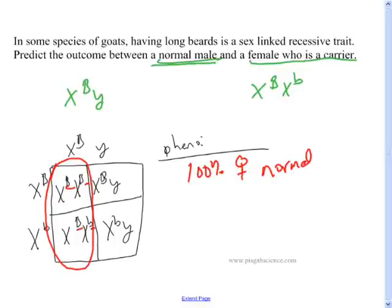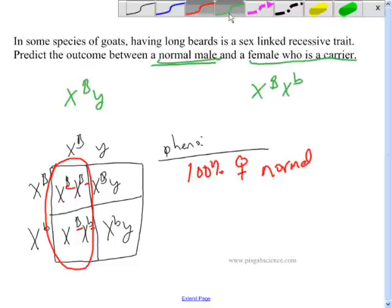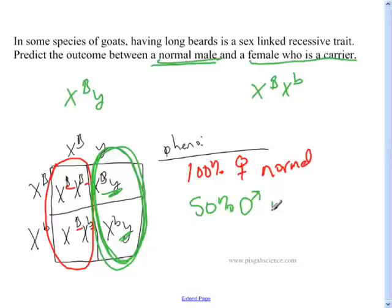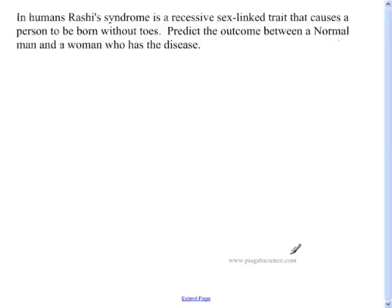So let's look at the males now. We're only going to look at these two on this side. You've got a capital B and a lowercase b. So 50% of the males are normal, and 50% of the males are affected.